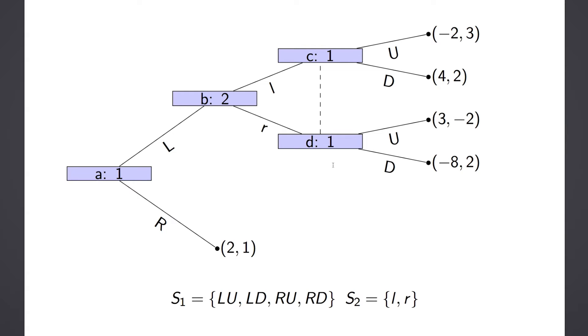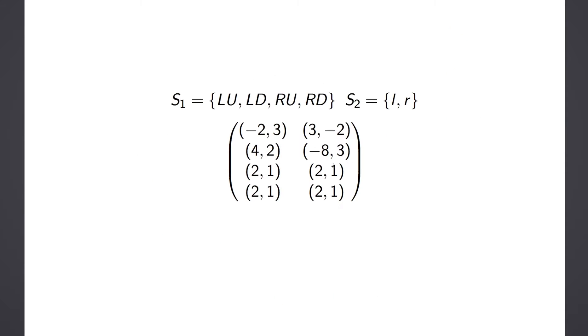And then the strategy set for Player 2 is much simpler. So then once we've done this, we can write down the normal form representation because if we know the strategies, we know their outcomes from the extensive form.